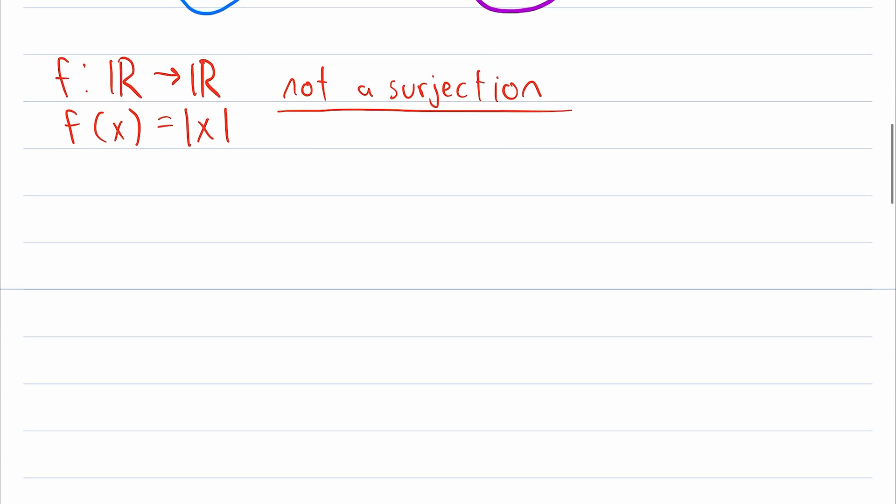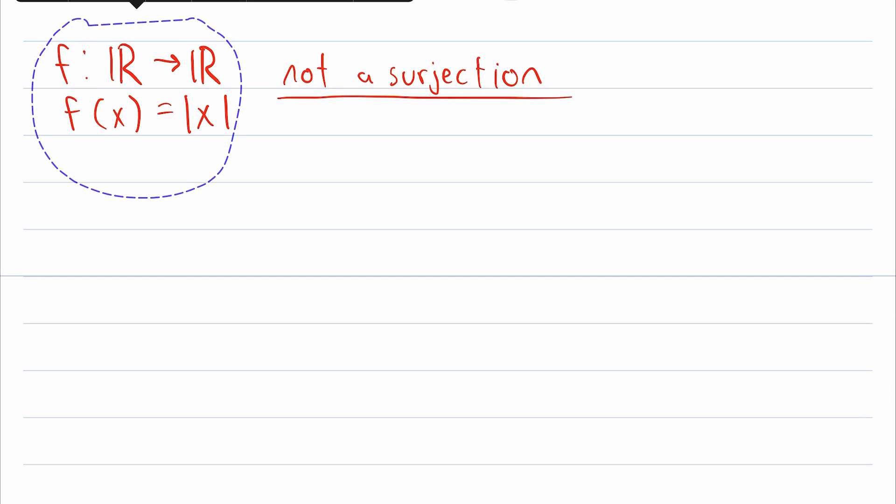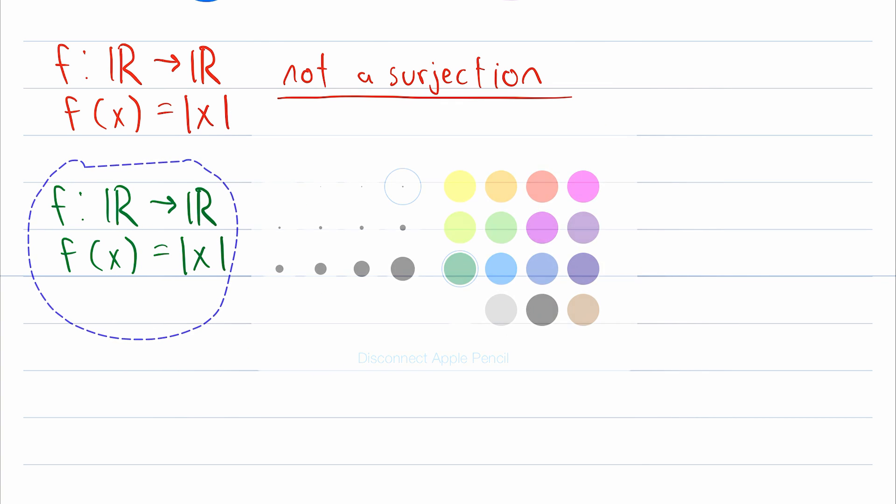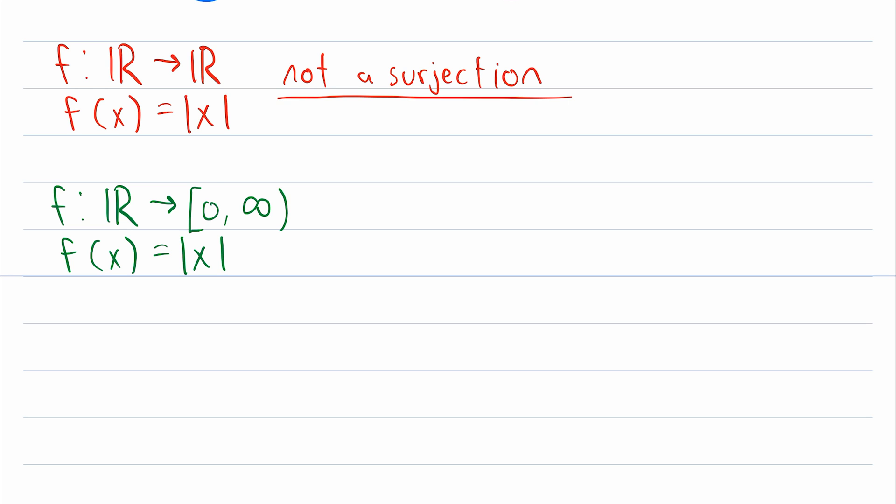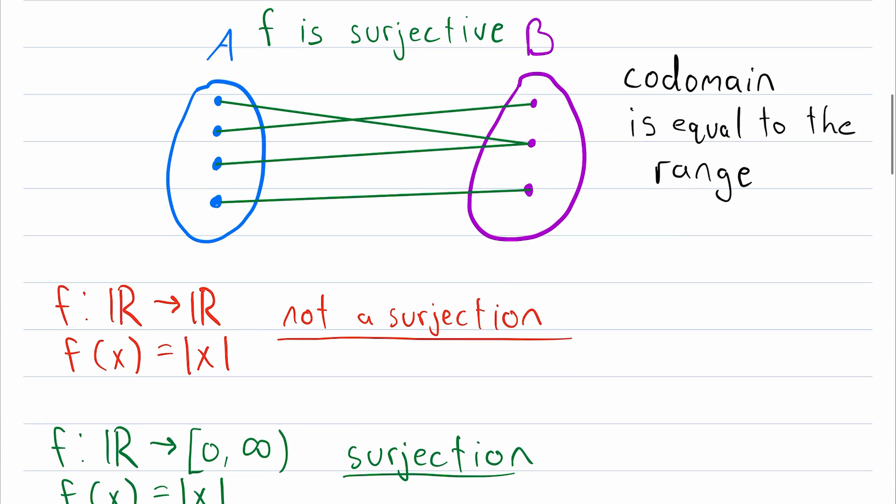However we could make this function a surjection if we slightly changed its definition. Let's just do a little bit of copy and paste and then change this color to green. To make this function a surjection we'll change the codomain from the real numbers to the semi-closed interval from zero to positive infinity. Now that we've changed our codomain this function does map to every element of the codomain. So this function is a surjection. A way to think about surjections is that a surjective function covers the entire codomain.